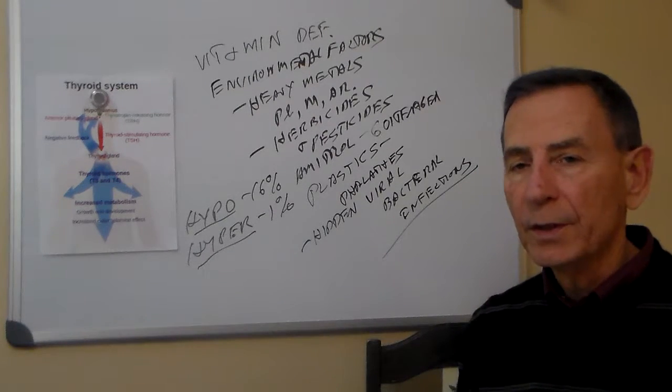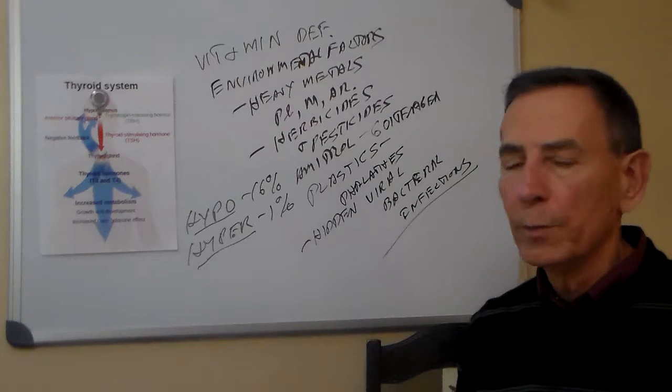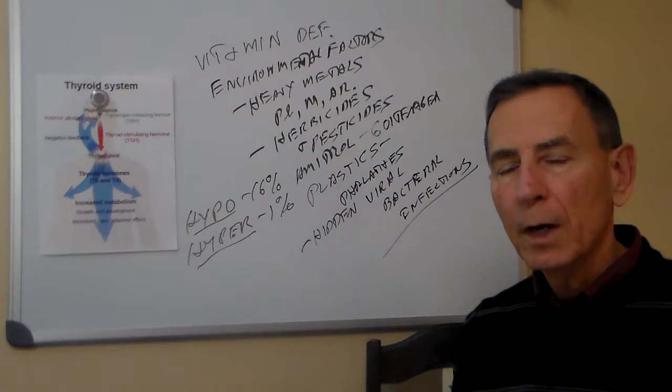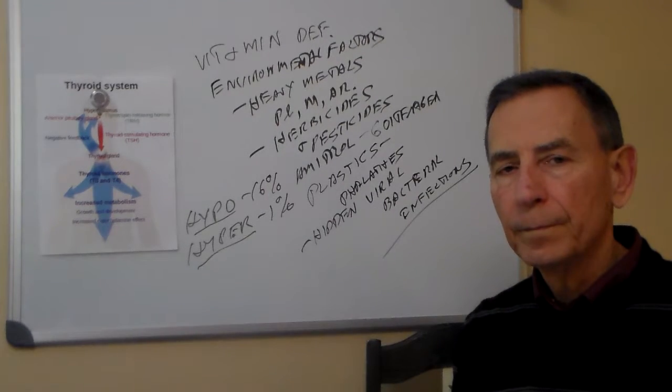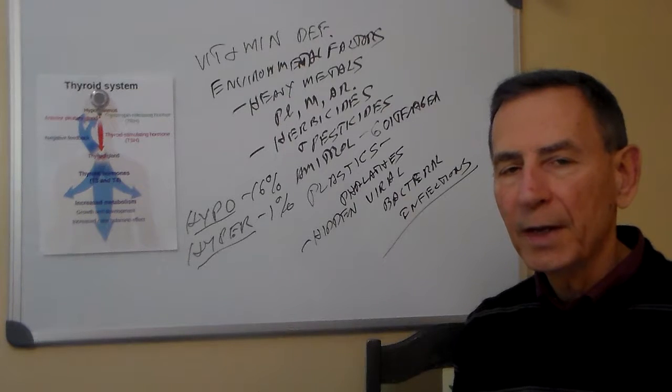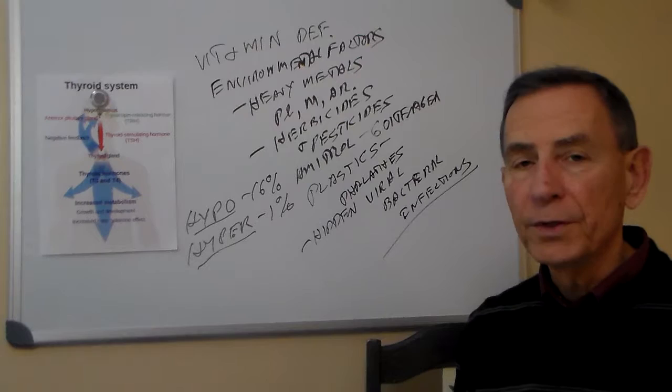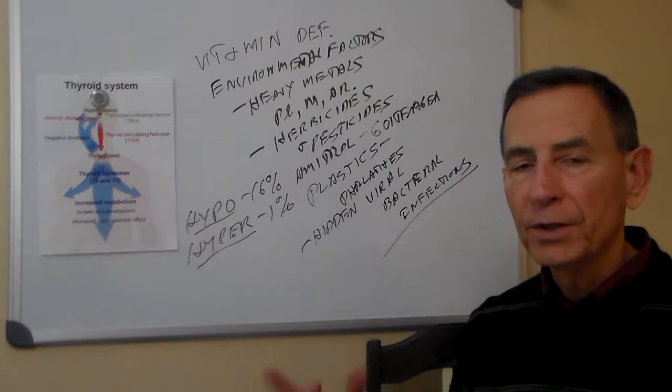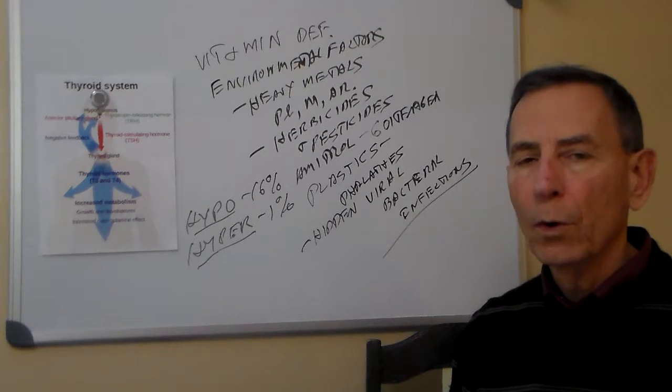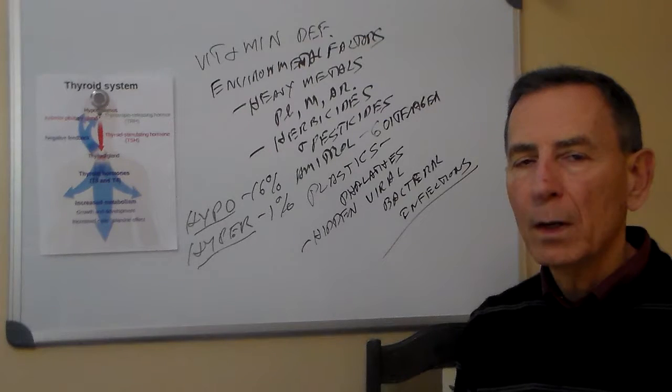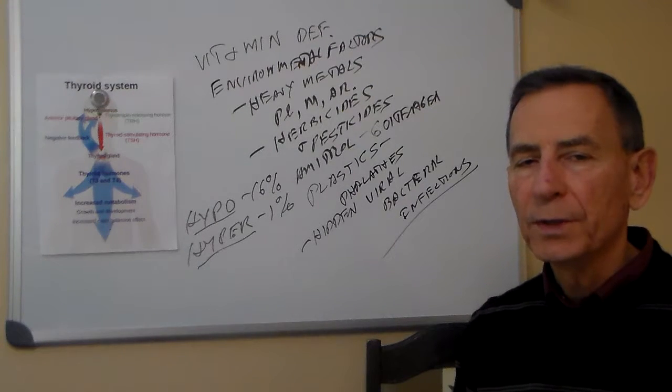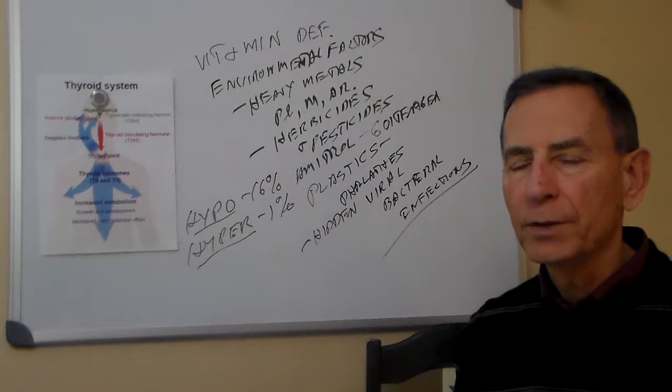Graves disease is the autoimmune version of hyperthyroidism. And in that case, antibodies which mimic thyroid stimulating hormone cause the thyroid to produce more hormones all the time. So we need to look to what's causing the autoimmune response.